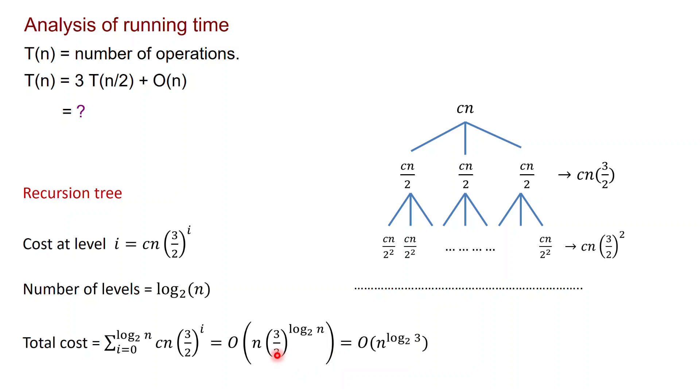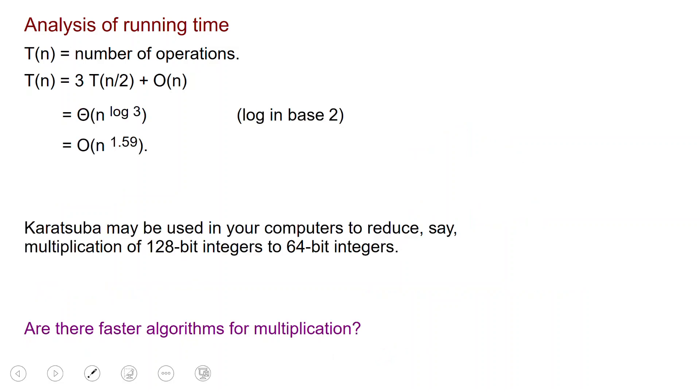So this whole thing is just a big O of n times three halves to log base 2 of n. I've just picked the largest term, which is the one for i equal to log base 2 of n, and this dominates the sum. So now, 2 raised to log base 2 of n is just a factor of n, which is going to cancel out with this. And all I'm left with is 3 raised to log base 2 of n, which is the same thing as n to log base 2 of 3.